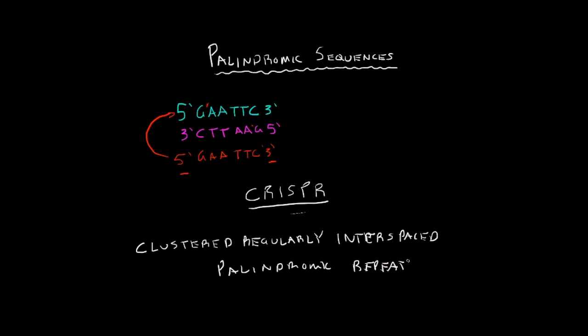So as you can see, palindromic right here, so obviously CRISPR uses these palindromic repeats to be able to cut enzymes.